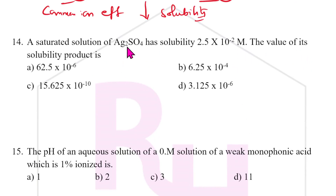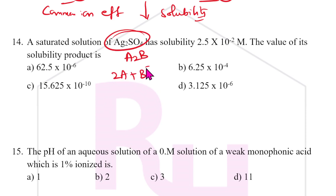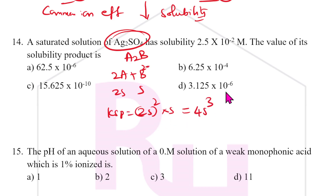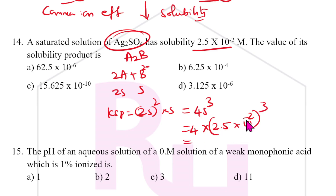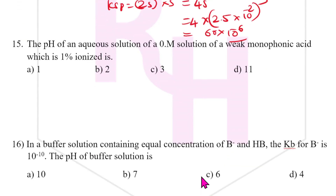Fourteenth question: saturated solution of Ag2SO4 has solubility 2.5 × 10⁻² M. For an A2B type salt, Ksp = (2s)² × s = 4s³. Substituting s = 2.5 × 10⁻², we get 4 × (2.5)³ × 10⁻⁶. Since 2.5³ is between 8 and 27, the answer is approximately 6 × 10⁻⁵, so A is the answer.